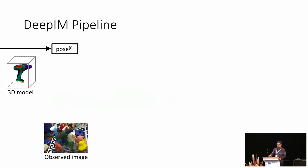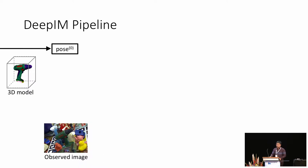Let's go through the framework first. Let's assume we have a 3D model of the object we are trying to locate in an image, along with an initial pose estimate denoted as pose zero, which can be obtained from other methods. First, we can use pose zero and the 3D model to render an image that shows what the object will look like at pose zero.